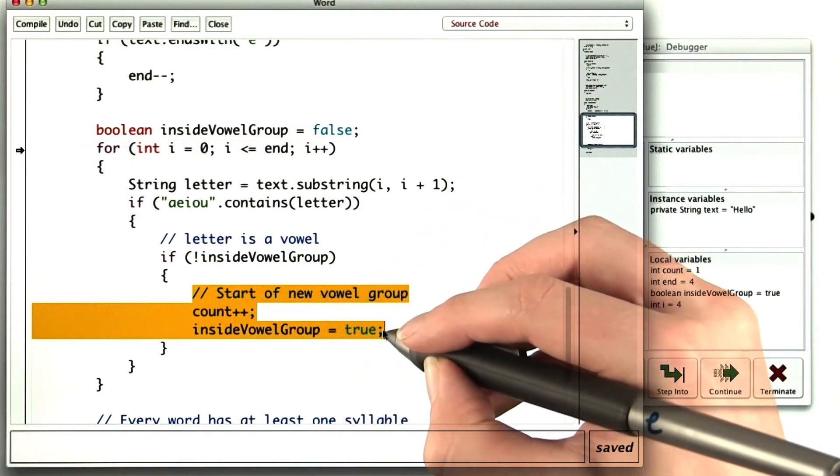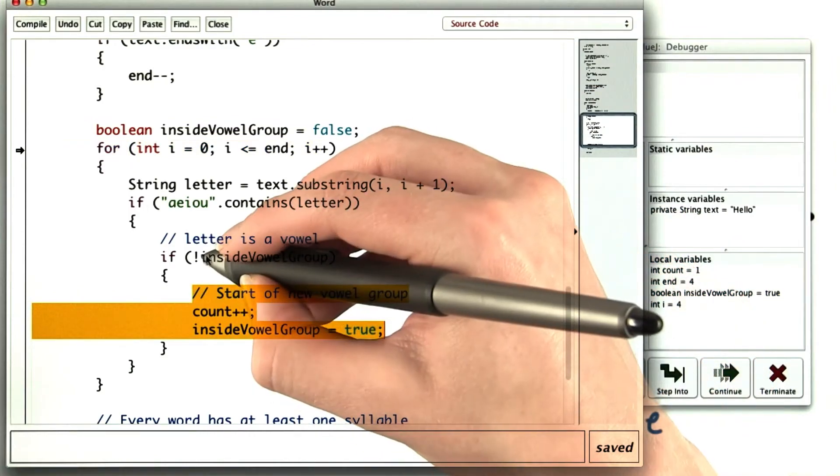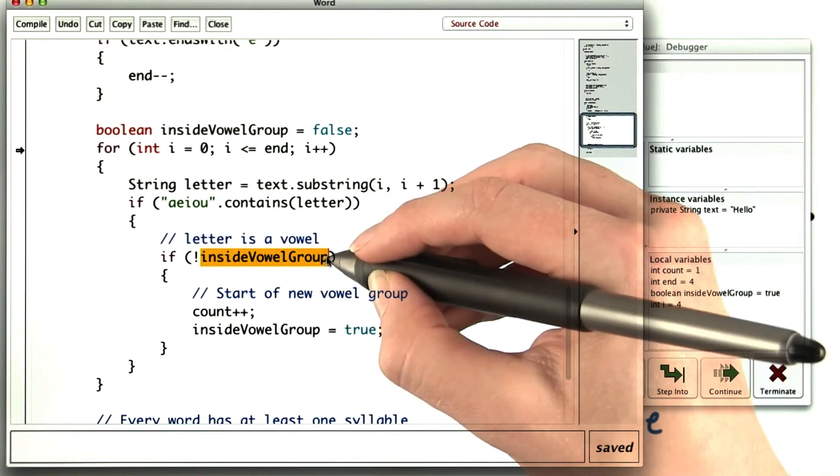It looks like it didn't run these lines, because inside vowel group is already true. But that's a mistake.